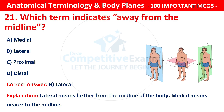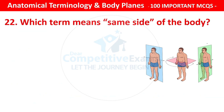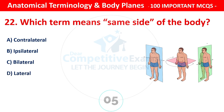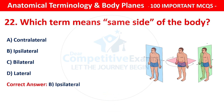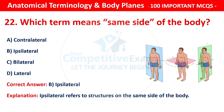Question number 22: Which term means same side of the body? Options are: contralateral, ipsilateral, bilateral, or lateral. The correct answer is B — that is ipsilateral. Ipsilateral refers to structures on the same side of the body. Contralateral means on the opposite side.